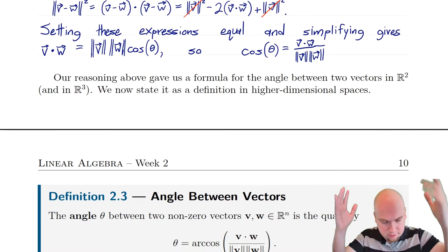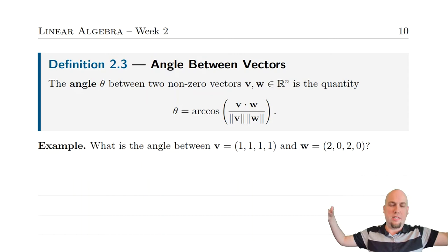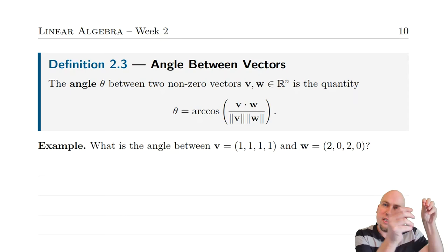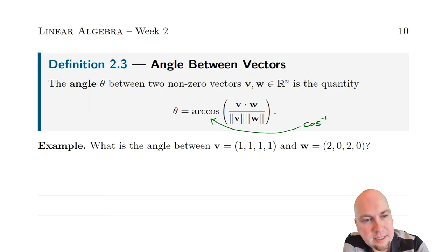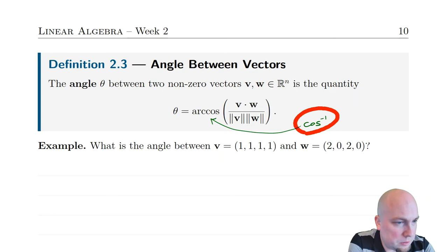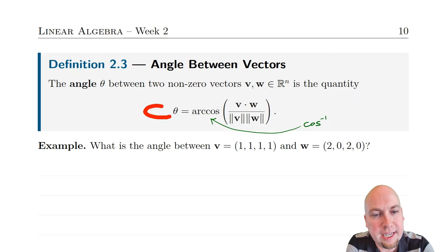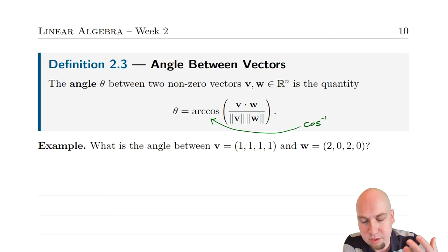So it's definition time. The angle between two vectors is the quantity arc cosine of v dot w divided by the product of their lengths. This arc cosine — maybe you've seen it written as cosine inverse — is just the function that undoes what cosine does. It's the inverse of cosine, at least on a restricted interval of angles.